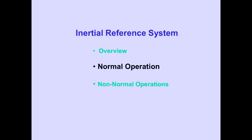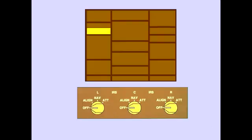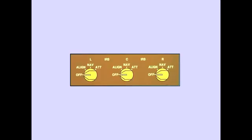Now let's look at normal operation of the IRS. The IRS controls are located on the overhead panel. Normally, only the off position and nav position are used. Align and attitude positions will be discussed later in this module.